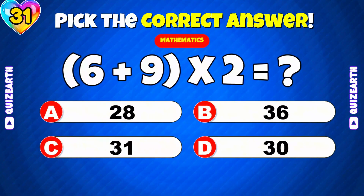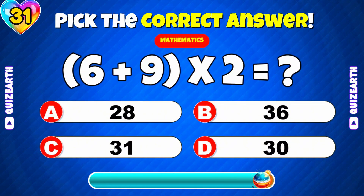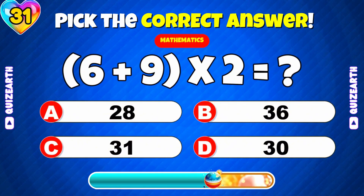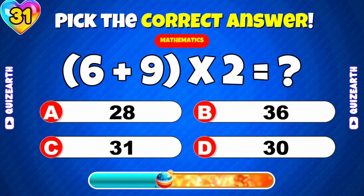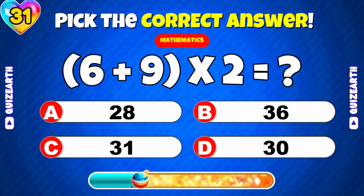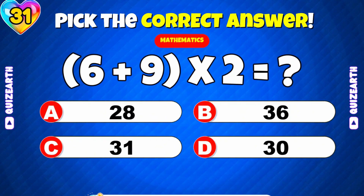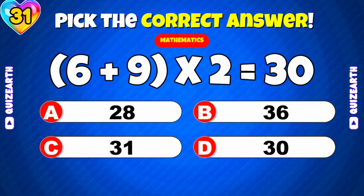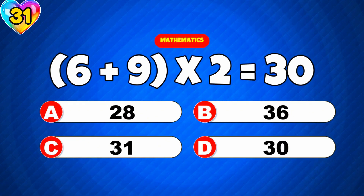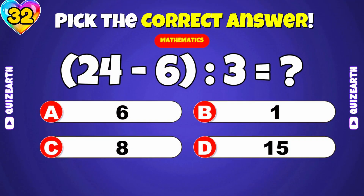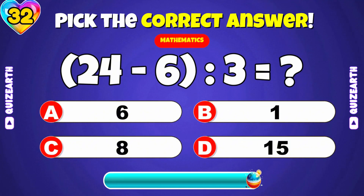What is 6 plus 9 times 2? 30. What is 24 minus 6 divided by 3?